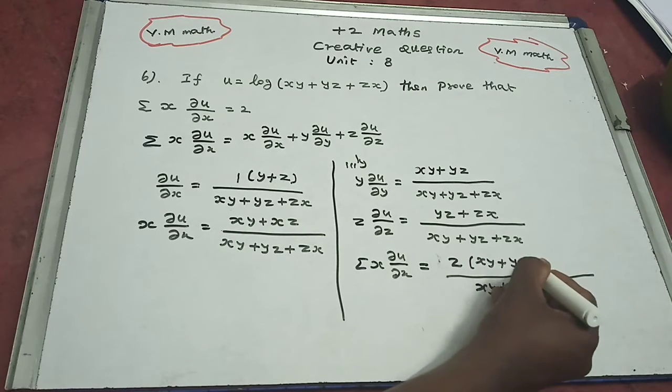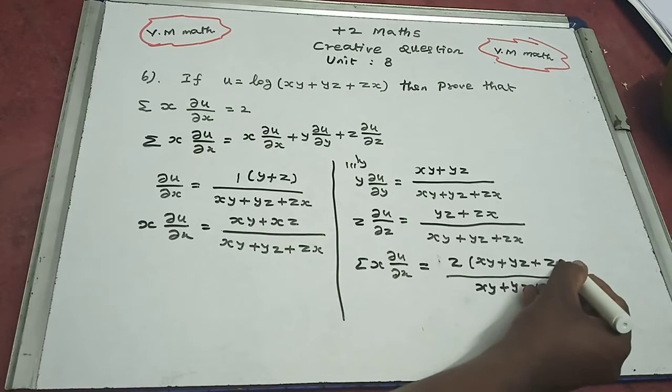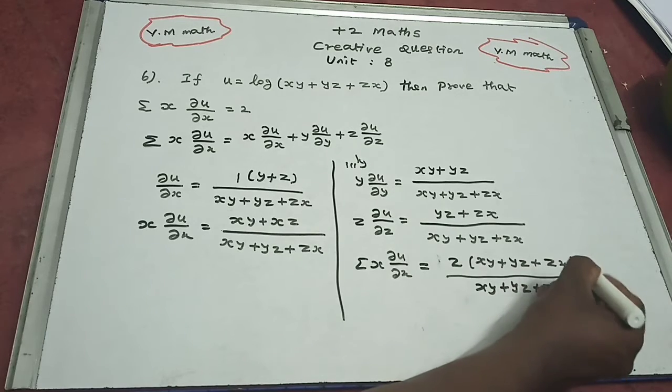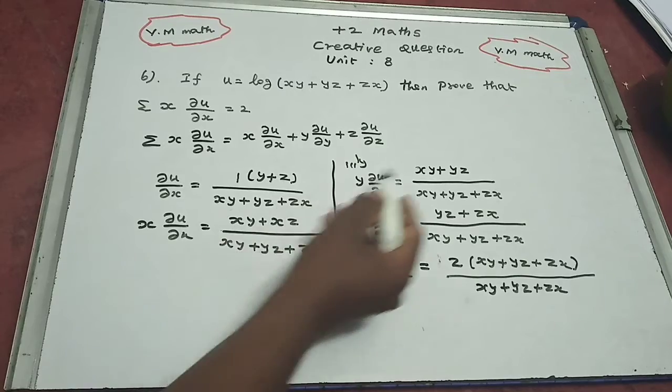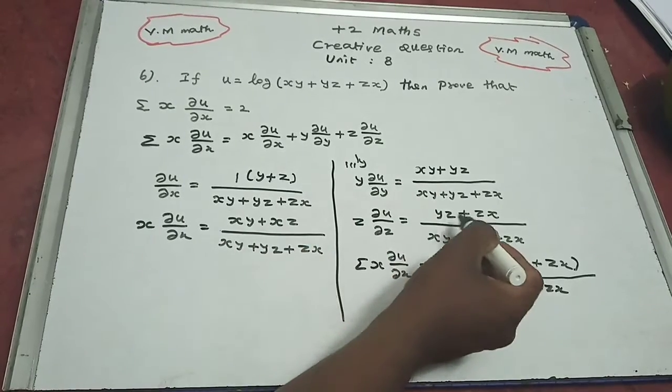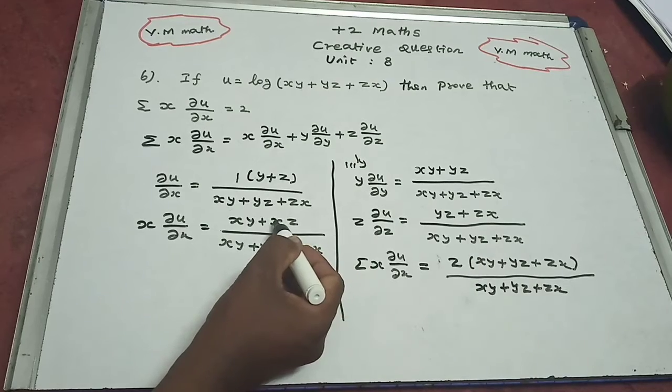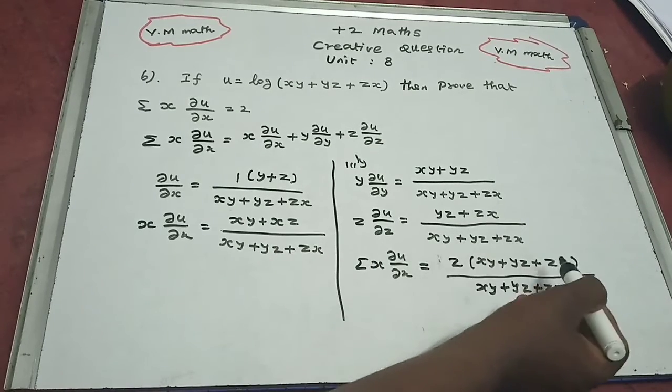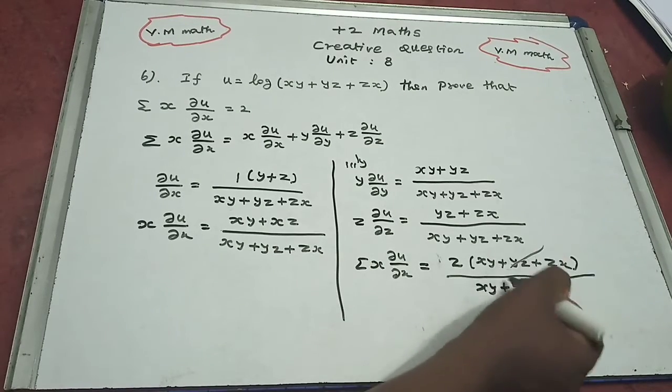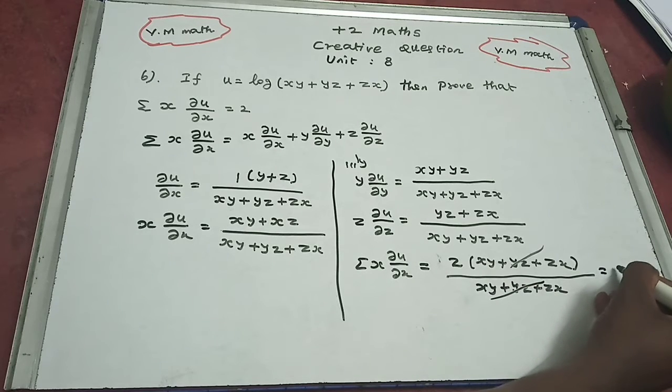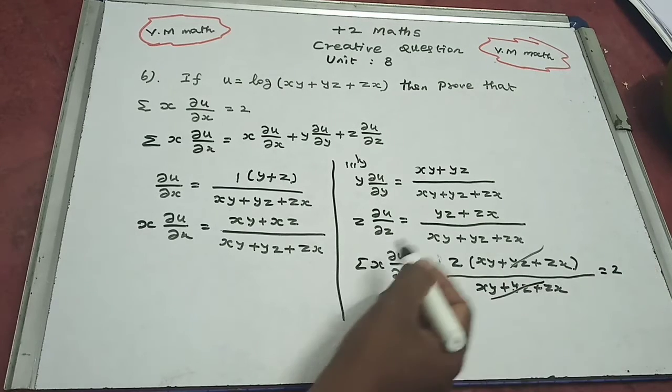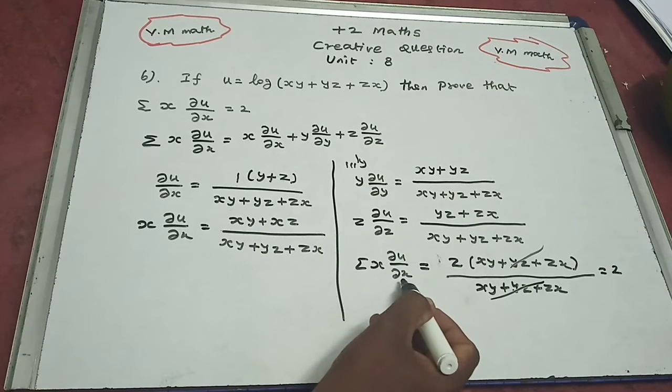So 2xy plus 2yz plus 2zx over xy plus yz plus zx, which equals 2 times (xy plus yz plus zx) over (xy plus yz plus zx).